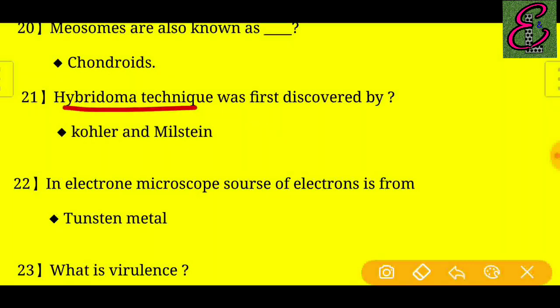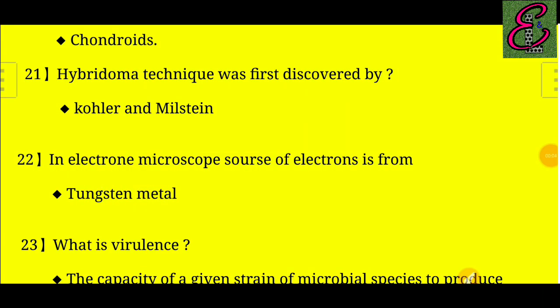Question number twenty-one: Hybridoma technique was first discovered by whom? Answer: It was first discovered by Kohler and Milstein.